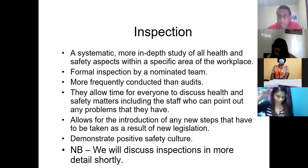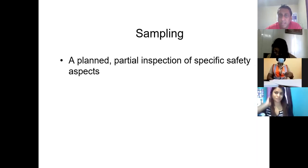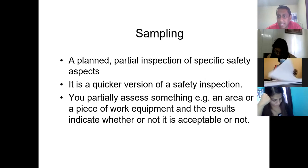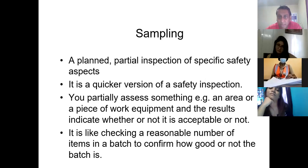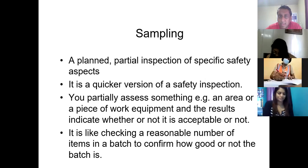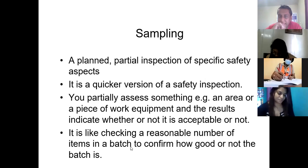Sampling, surveys, tours, and inspections are the other active monitoring types. Sampling is checking a reasonable number of items in a batch — for example, sampling dust in one of two similar workshops and assuming the result applies to both. A safety survey examines one particular aspect, such as PPE, through questionnaires asking workers questions like whether they find PPE comfortable. Tours are unplanned walks — a walk around the company, quick and easy to organize.